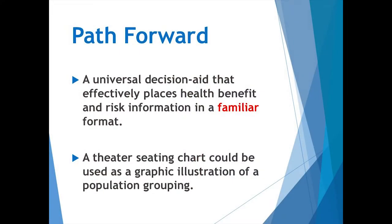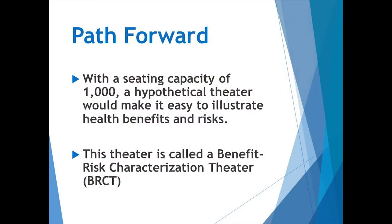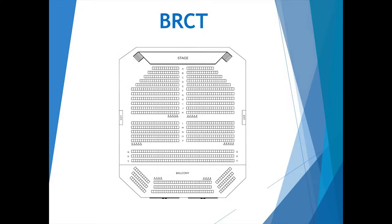We were thinking of producing a universal decision aid that effectively places benefit and risk information in a familiar format. A theater allows people to see themselves — in church, in a synagogue, in a stadium — and get a sense of the risks and benefits. With a seating capacity of 1,000, a hypothetical theater makes it easy to illustrate health benefits and risks. We call it a benefit-risk characterization theater. Here's a picture of a theater of exactly 1,000 seats — no math involved, no arithmetic. It uses absolute values and is something familiar that people can relate to.